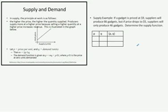So, let's say a gadget is priced at $9 and if it's priced at $9, the suppliers will produce 86 gadgets. But if the price drops to $5, the suppliers will only produce 46 gadgets. When the price drops, the producers will only make less because they're not going to make as much.